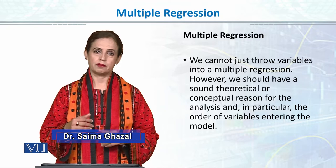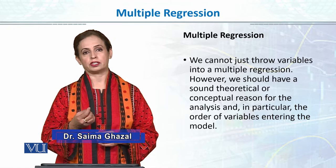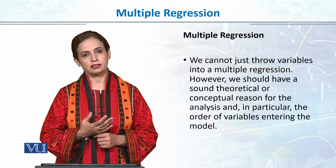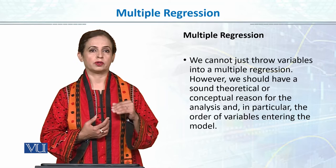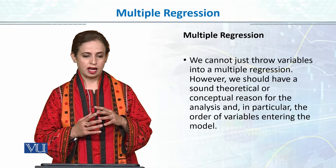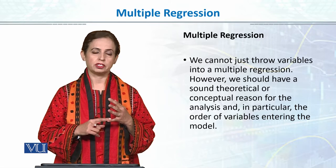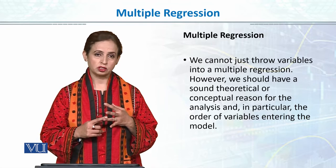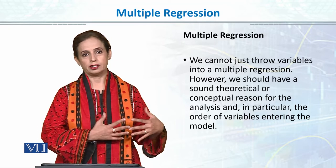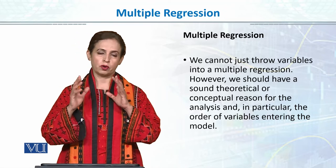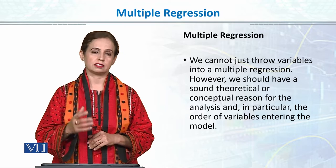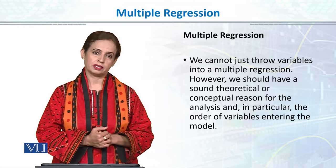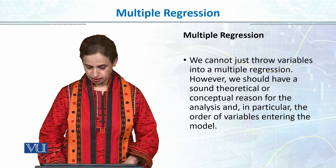Multiple regression means that we have multiple independent variables or predictor variables, and there are many methods to add them into the regression. You cannot just throw everything in — if you have self-esteem, self-image, locus of control, resilience, adjustment, and happiness, and you are checking mental health, you cannot just throw all those variables into the regression model. We have to follow the theoretical framework to decide which independent variables to add.